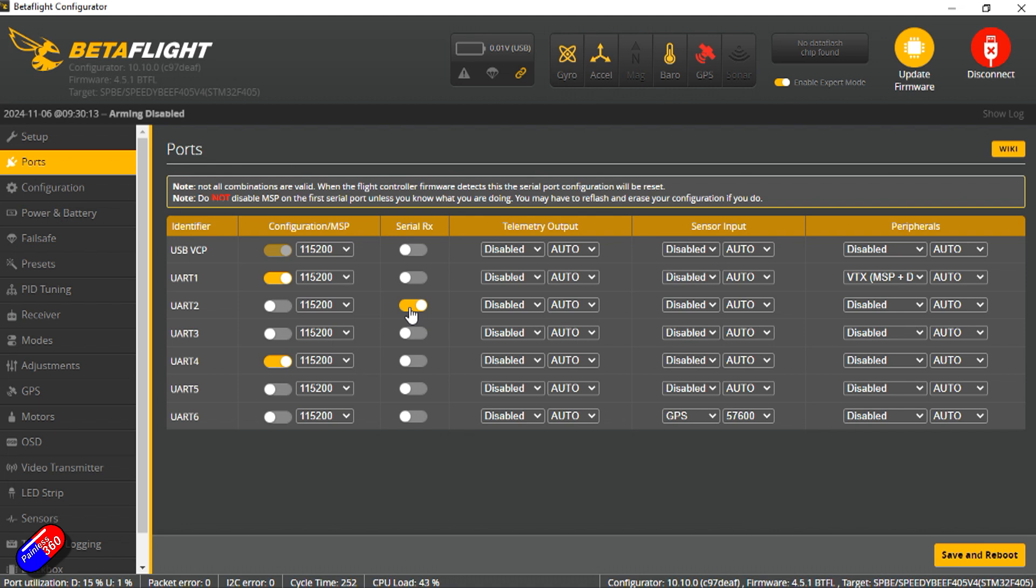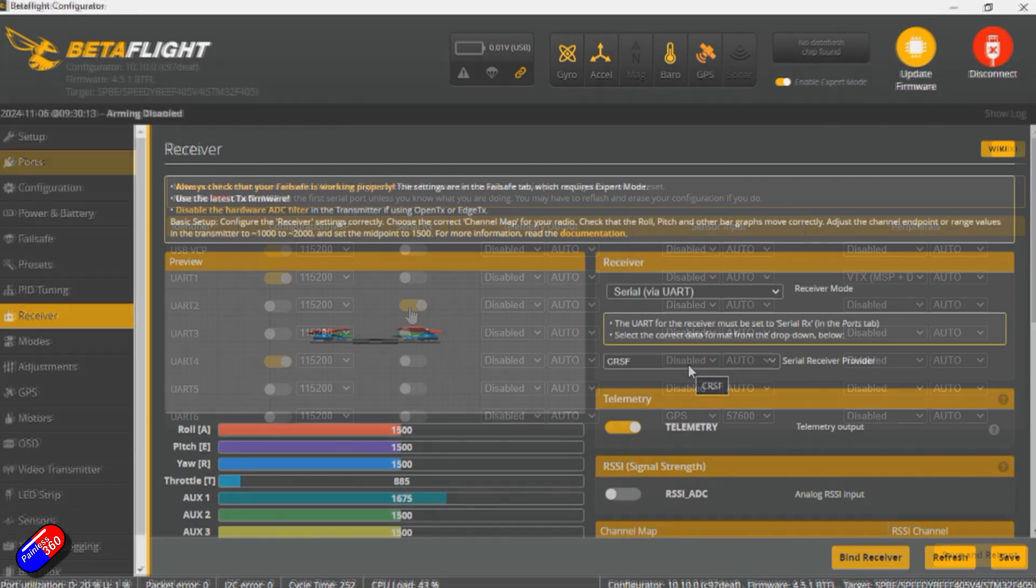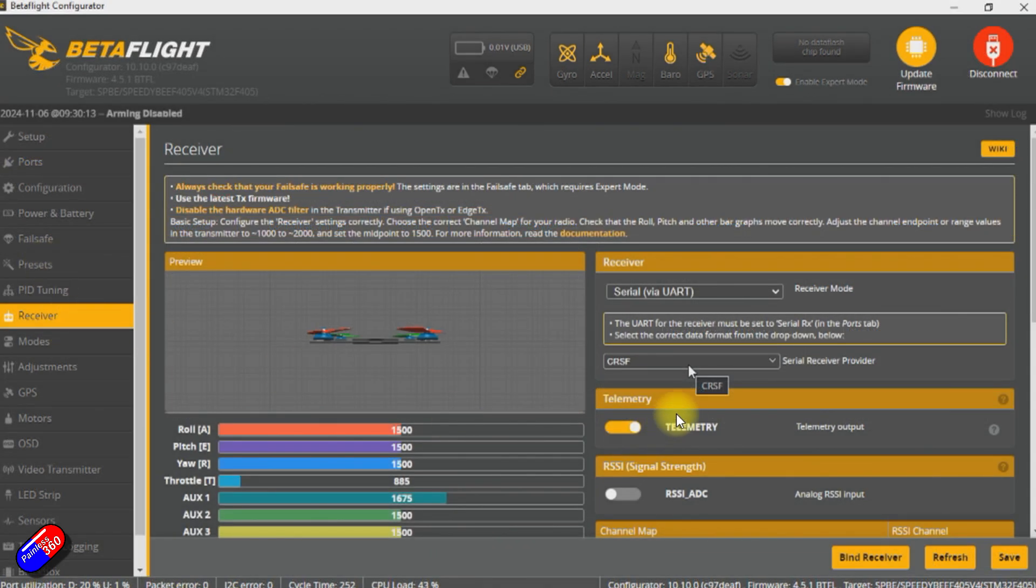Sometimes on a flight controller, if it has inputs for SBUS and other things, it may mean that this has to be configured for a different UART. So make sure you're not overlooking that step. The other thing you need to do is in the receiver tab, you need to be setting CRSF as the serial receiver provider. Now this is beta flight that we're talking about here, but this tends to be similar kind of things that you have to do in both iNav and even things like RD pilot. By setting this up CRSF along with the ports tab, that is telling the flight controller to expect to be talking CRSF on that particular UART that you've configured.